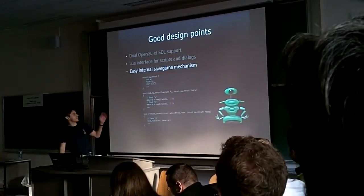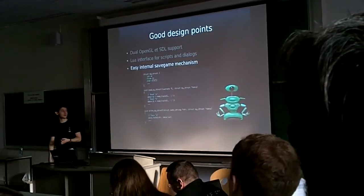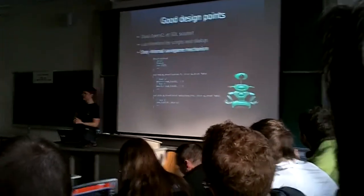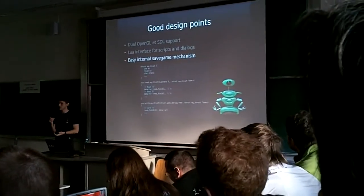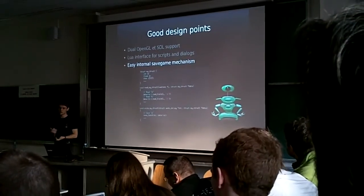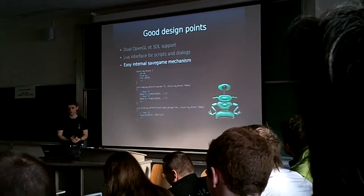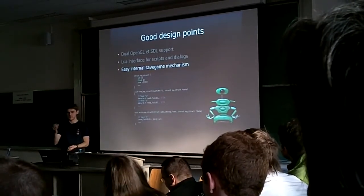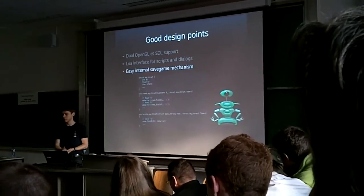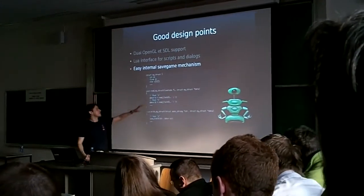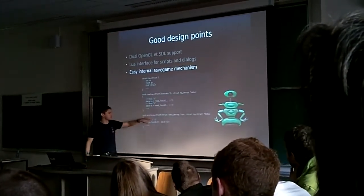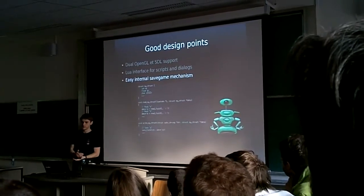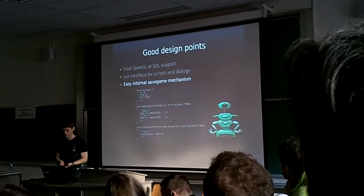We have an internal save game mechanism. Because the engine is written in C, you have no way of listing the contents of a structure, so you have to do it by hand. What we actually have is a bit of Python script which parses the definition of the structures and outputs code like 'read_[structure_name]' and 'write_[structure_name]'. So it does the saving of the game practically automatically.